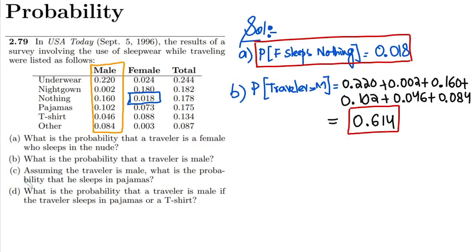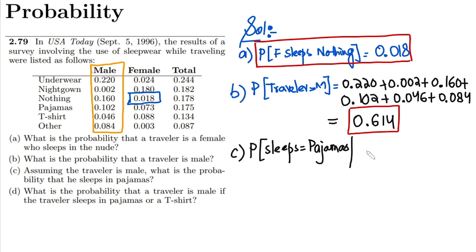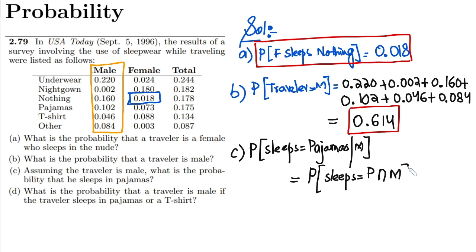For part c, assuming the traveler is male, what is the probability that he sleeps in pajamas? I need to use conditional probability. The formula is: P(pajamas ∩ male) divided by P(male).